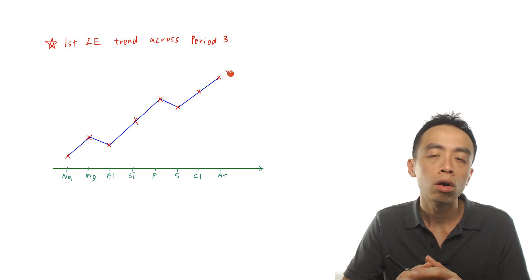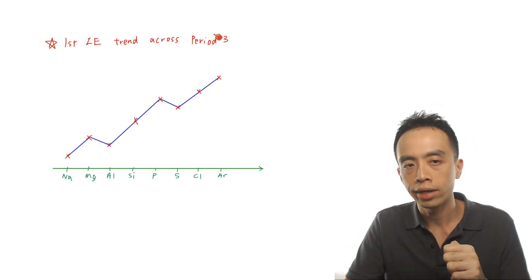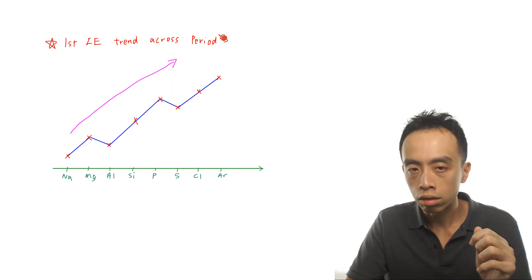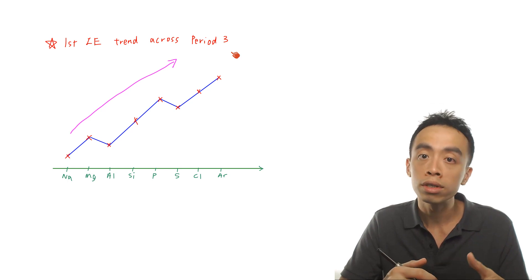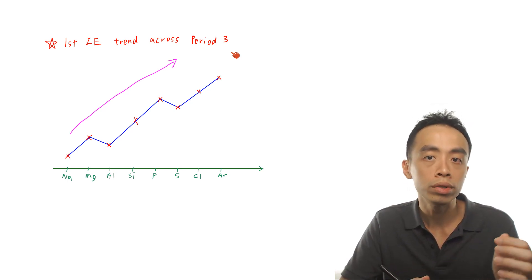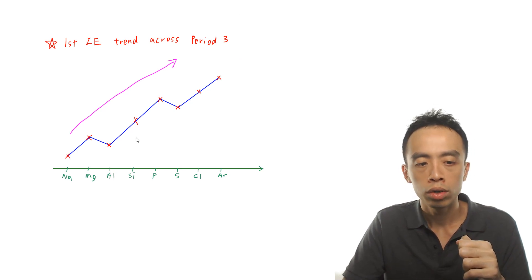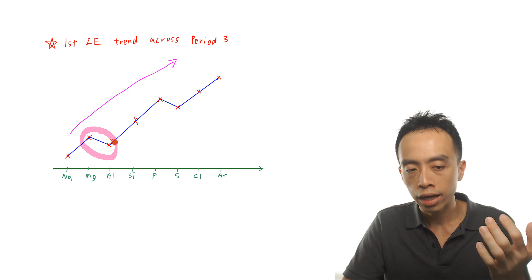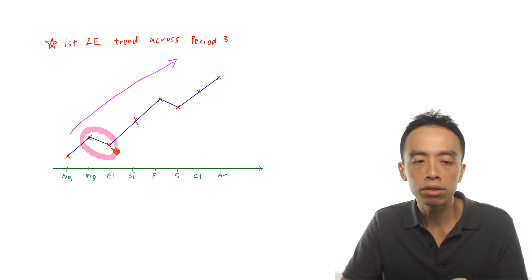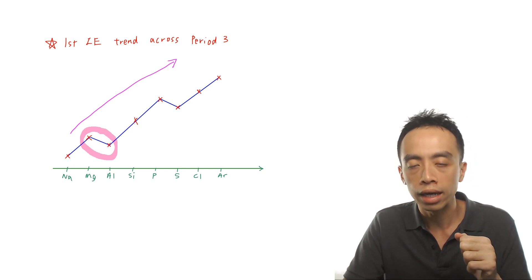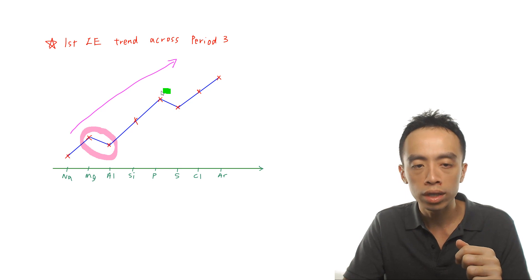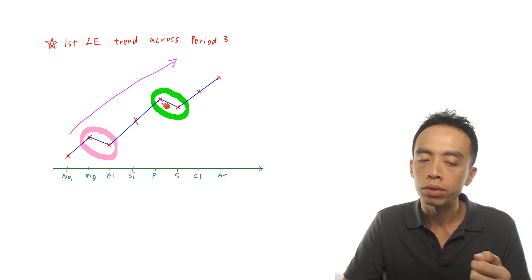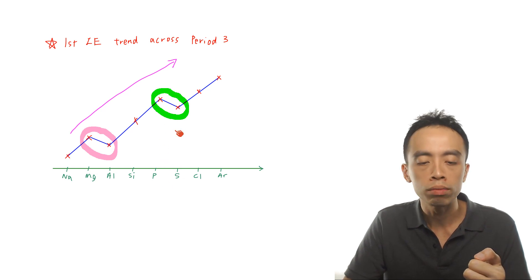We notice altogether three things. The first is the general trend — it actually increases across period 3. But it is not a consistent increase; there are two discrepancies or two decreases. The first is between magnesium and aluminum — a dip between this group 2 element and group 13 element, where aluminum has a slight decrease in ionization energy. The second discrepancy is from phosphorus to sulfur, where sulfur has a slightly lower first ionization energy than phosphorus. This is between group 15 and group 16 elements.